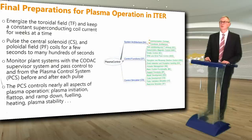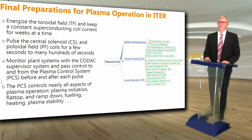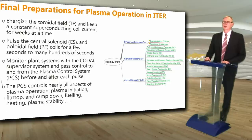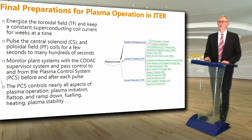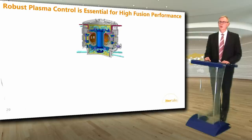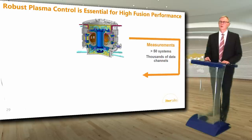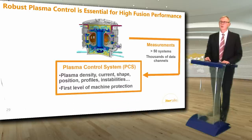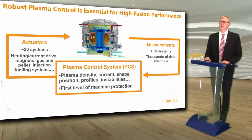The PCS controls nearly all aspects of plasma operation — from plasma initiation, flat top and ramp down, including plasma fueling and heating, and plasma stability. Robust plasma control is essential to high fusion performance. The plasma control system uses measurements from more than 50 diagnostic systems with thousands of data channels to act with about 20 actuators, including the heating and current drive systems, the magnets, and the gas and pellet fueling systems to produce high performance burning plasmas.